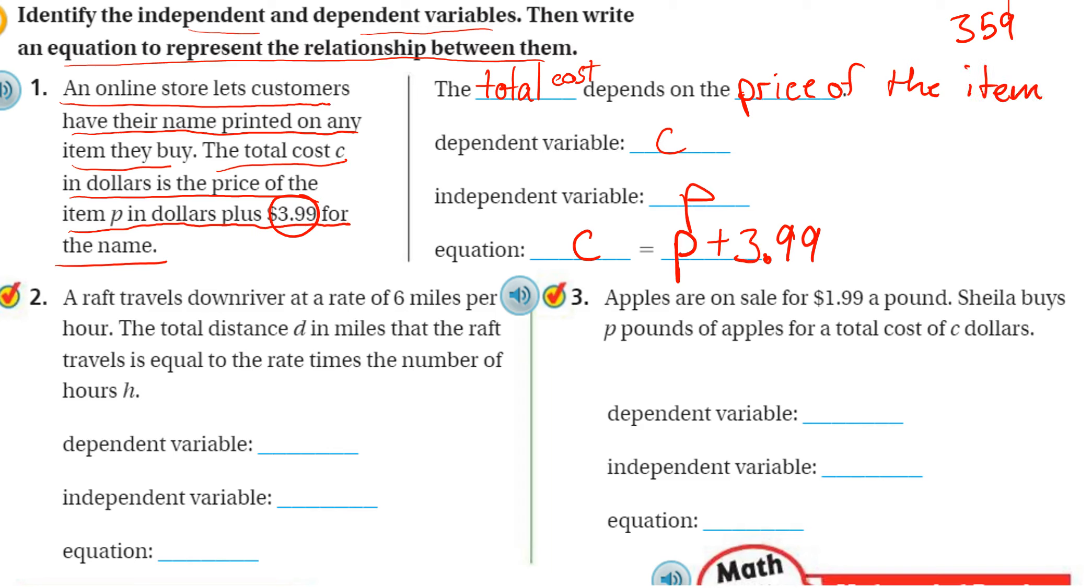So me personally, I like to work these backwards, I guess, a little bit. Instead of reading the first part, I like to write out the equation, because to me it's easier to see the equation. And once I know the equation, it's a lot easier for me to see which one is the dependent and independent variable. But I want you to solve it the way it's easiest for you.